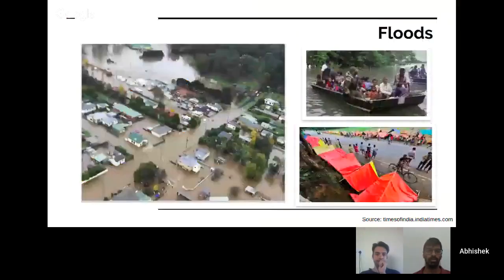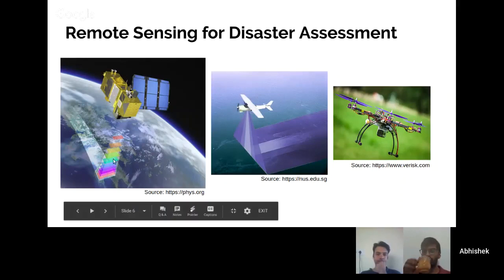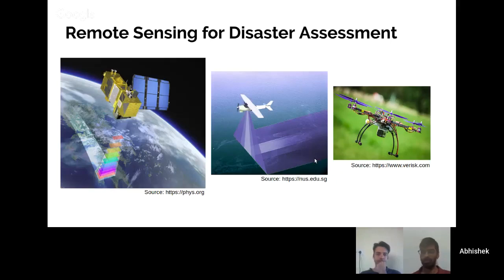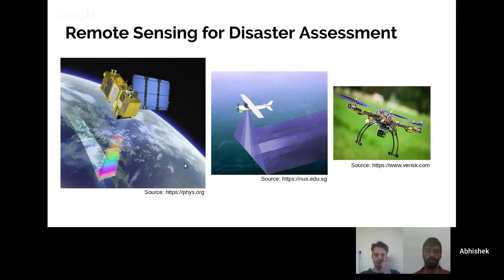One of the possible solutions to alleviate these losses comes from the technologies developed in the domain of remote sensing. Remote sensing platforms used for disaster assessment are classified into two types: the spaceborne platforms and the airborne platforms. Spaceborne platforms include satellites, whereas airborne platforms include airplanes mounted with cameras, hyperspectral cameras, and of course the popular nowadays, drones.